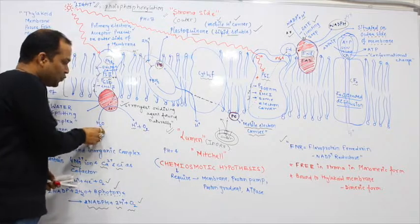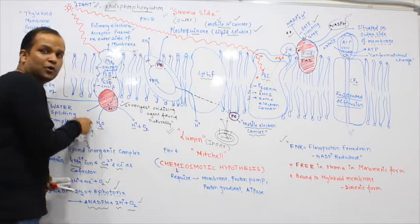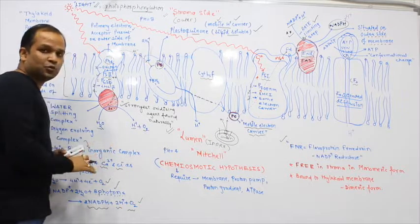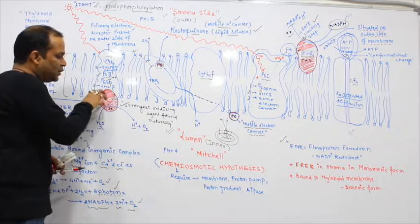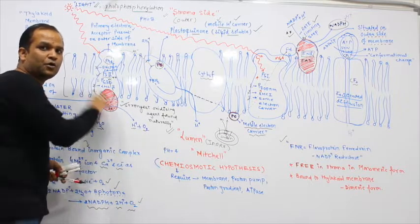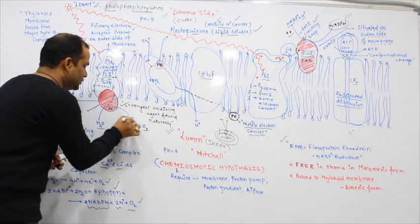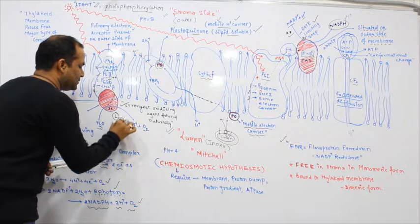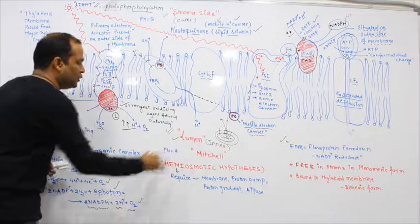Water is taken from the lumen side of the thylakoid and converted into H+ plus O2. Oxygen is produced towards the lumen and proton is also poured into the lumen. This first reaction increases proton in lumen side.